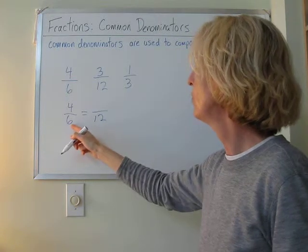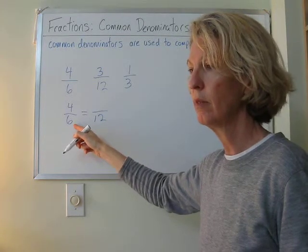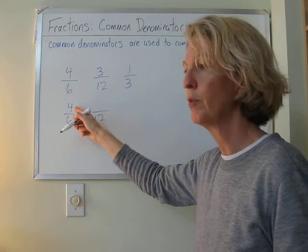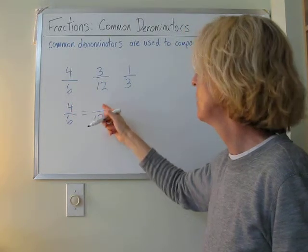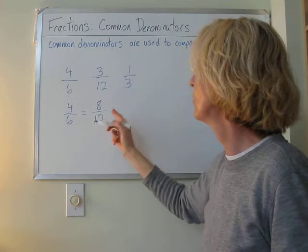Because we're going to write an equivalent fraction with a denominator of 12, and what do we multiply 6 by? 2. Okay. And then we multiply 4 by 2, which is 8. And that gives us a numerator of 8.